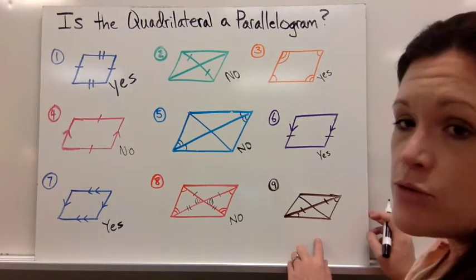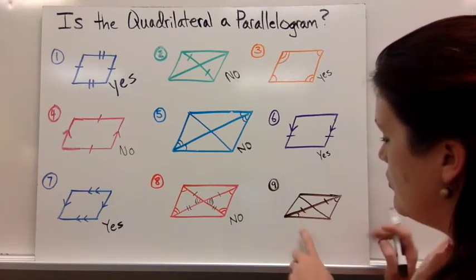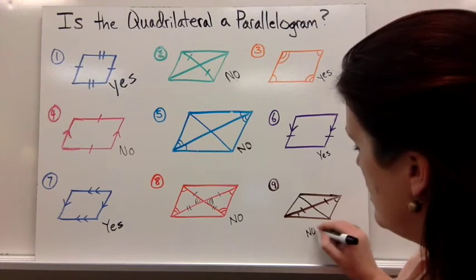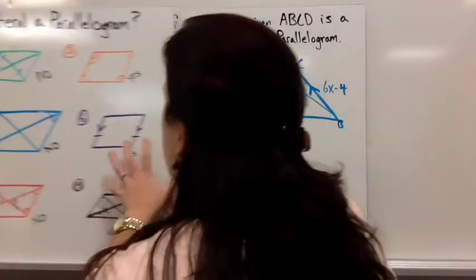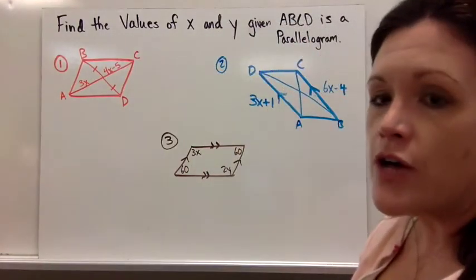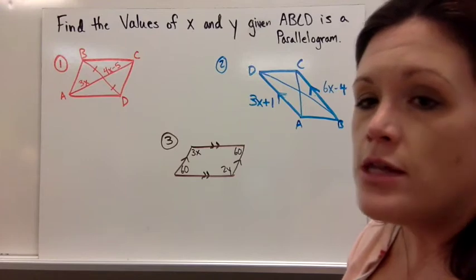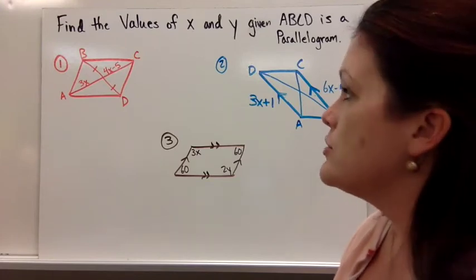For number nine, we know that this diagonal is bisected, and that angle's equal, but again, it's just not enough information. So let's look at three more examples of what if you're given a figure and you're told it is a parallelogram, then you use the properties of a parallelogram to help solve the problem.